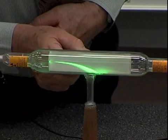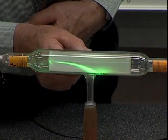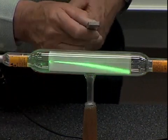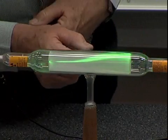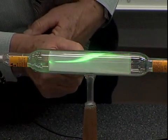So we get a deflection. In this case, the beam gets deflected downward. When I turn it around, magnetic field in the other direction, the beam gets deflected upward.